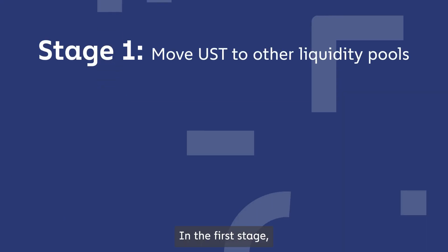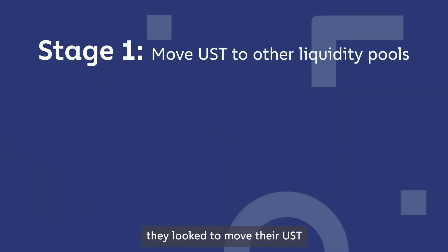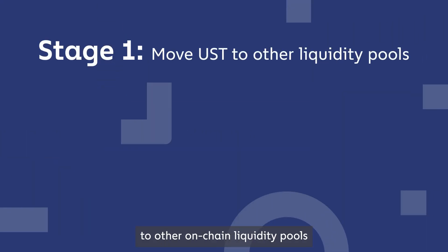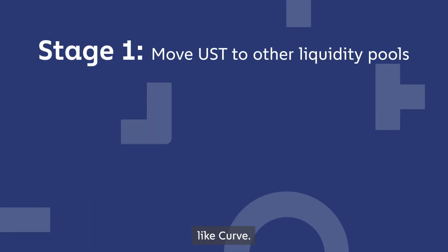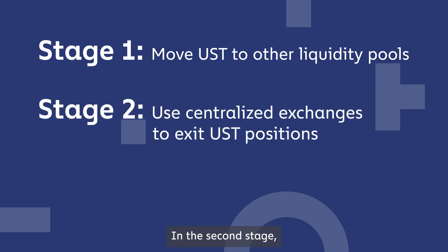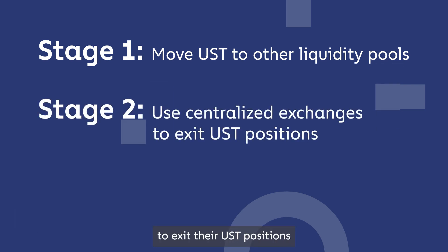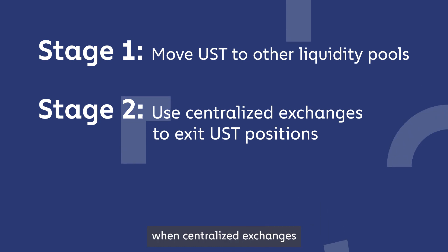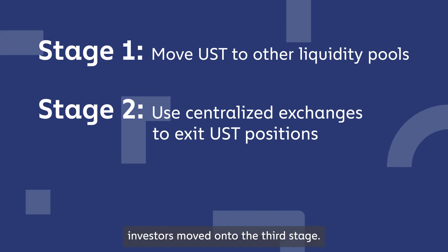In the first stage, they looked to move their UST to other on-chain liquidity pools, like Curve. In the second stage, investors were looking to centralized exchanges to exit their UST positions. When centralized exchanges stopped trading UST, investors moved onto the third stage.